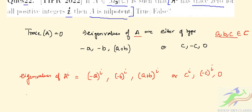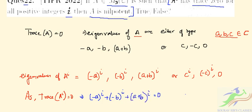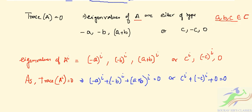Since trace of A^i equals 0, we have (-a)^i + (-b)^i + (a+b)^i = 0. This means the eigenvalues of A^i are all 0, so all eigenvalues of A must be 0. Therefore, A is nilpotent.